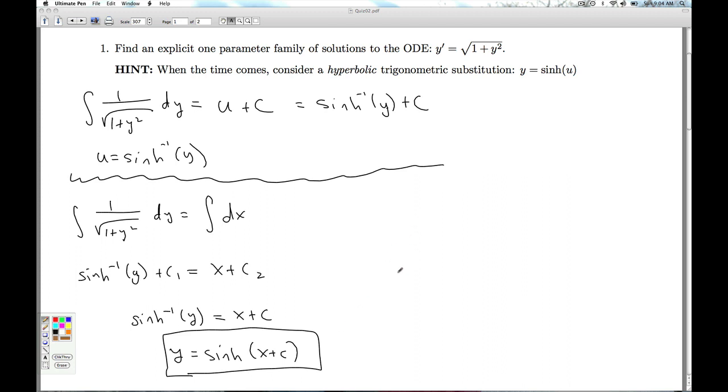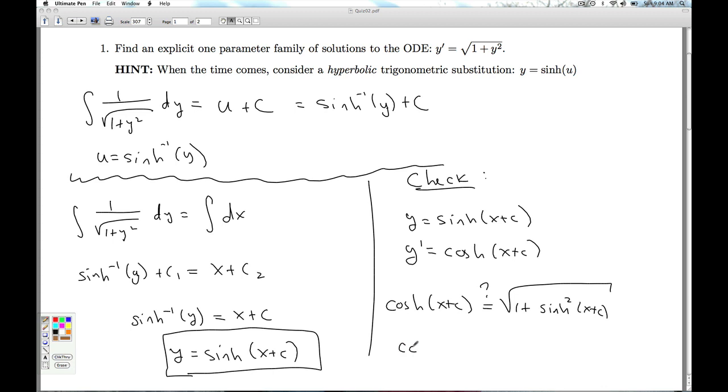Now, you can check your answer if you want. If y is sinh(x + c), y' is cosh(x + c). And so, is cosh(x + c) equal to the square root of 1 plus sinh(x + c) squared? It sure is. And so, that'll do it for number 1.